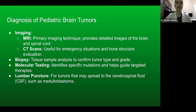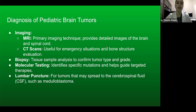Diagnosis of pediatric brain tumors includes imaging: MRI is the primary imaging technique, providing detailed images of the brain and spinal cord; CT scans are useful for emergency situations and bone structure evaluation. There's also biopsy for tissue sample analysis to confirm tumor type and grade, molecular testing to identify specific mutations and guide targeted therapies, and lumbar puncture for tumors that may spread to the cerebrospinal fluid, such as medulloblastoma.